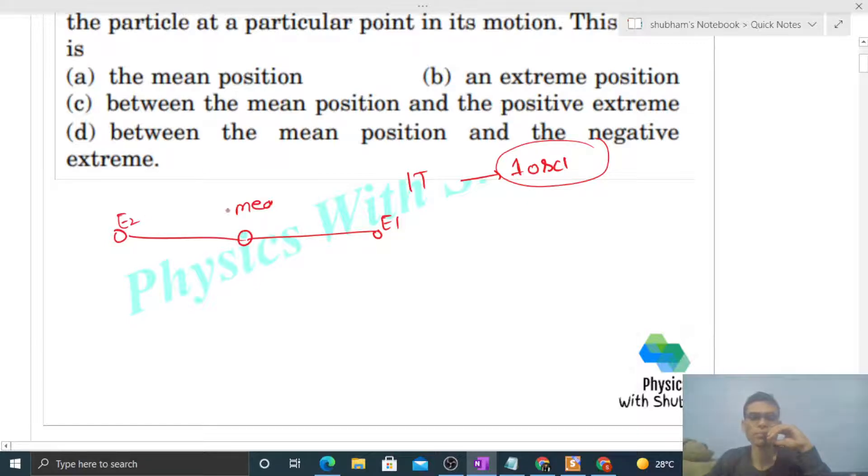If we talk about the mean position and start from there, then next time when the particle comes to mean position, has one oscillation completed? Check it. The particle started from mean position, went to the extreme, and came back to mean position. So here one oscillation is not complete. So consecutive appearances do not mean one oscillation is complete. It means this is not one time period.